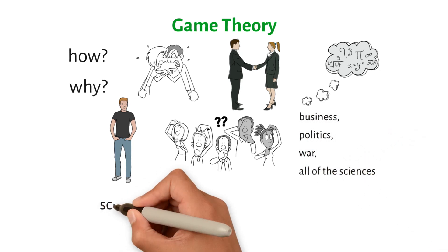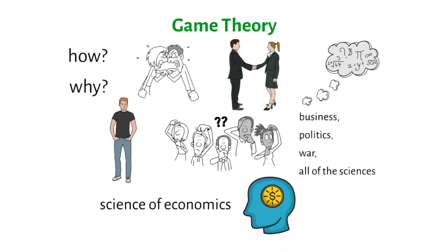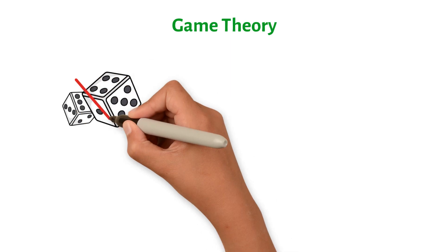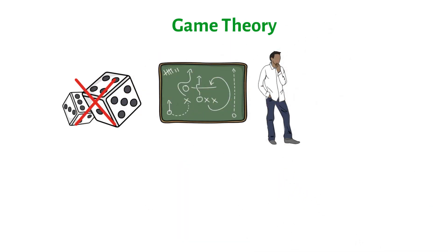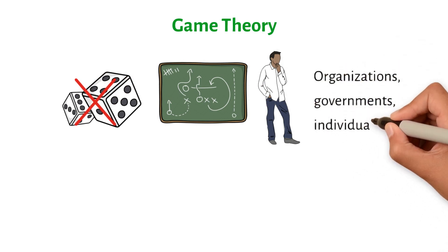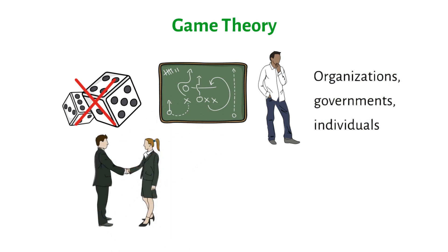Game theory is a part of both the science of economics and the decisions we make about money. This is not a game of chance. It is a game of strategy in which the players try to predict each other's moves and the results of those moves. It is a way to look at how organizations, governments, and individuals should act when they need to work together.